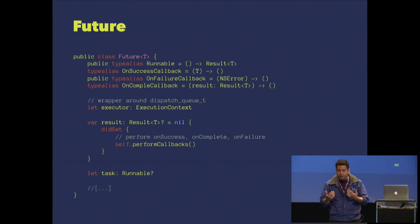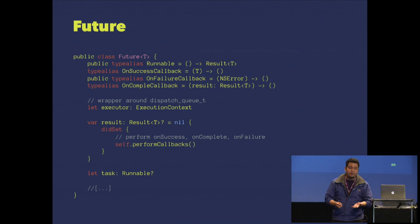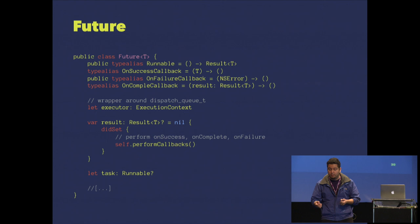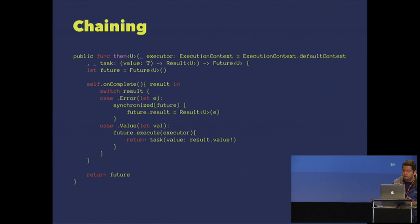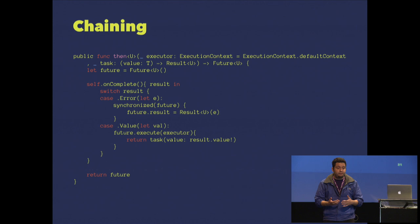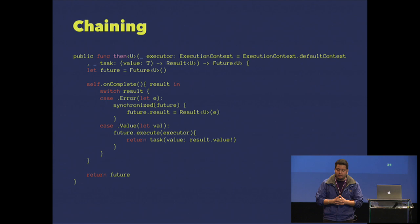You can find this code on GitHub — I'll provide details at the end. To create a future, we need an execution context as a wrapper around a dispatch queue, a result to compute, and a task. I created a type alias 'Runnable' — common in Java. In Java a runnable uses try-catch, but we don't have try-catch in Swift, so we handle it with errors and the result data structure.